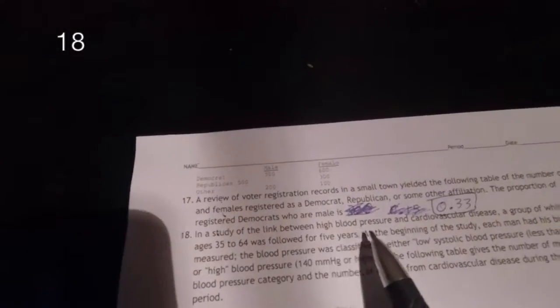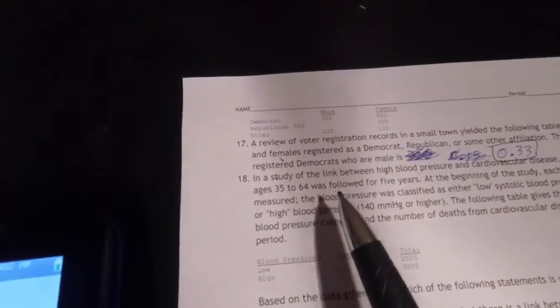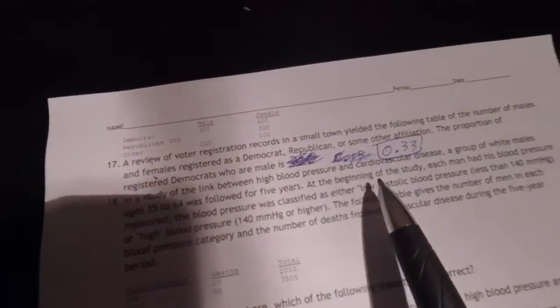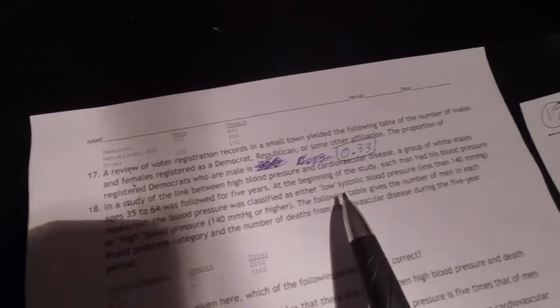In a study of the link between high blood pressure and cardiovascular disease, a group of white males ages 35 to 64 was followed for five years. At the beginning of the study, each man had his blood pressure measured.